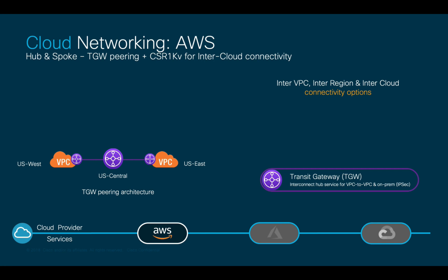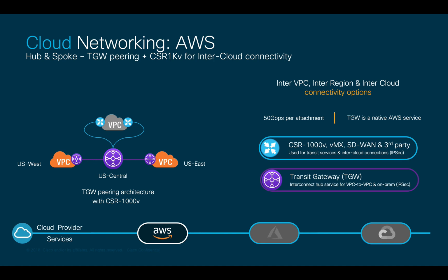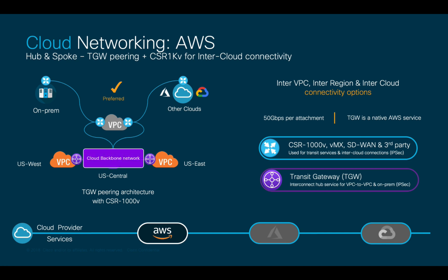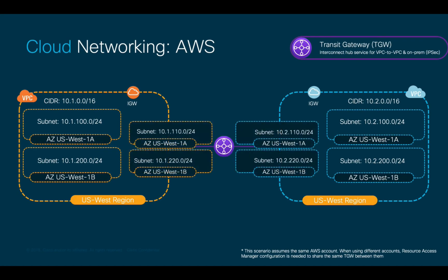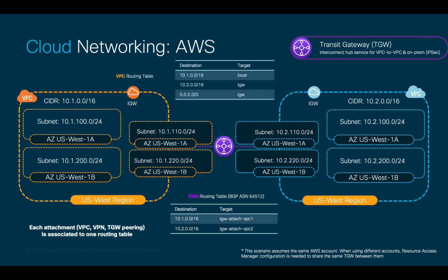TGW is an interconnect hub service that the different VPCs attach to, allowing higher bandwidth per attachment than VGW, and also offering VPN connection options to external environments. CSR1000v can also be used in conjunction with TGW for external connectivity to on-prem sites and across clouds. TGWs are the preferred option for inter-VPC communication, especially since it uses the cloud provider backbone network. You just have to attach each VPC to the TGW service using a subnet or subnets on different availability zones from each VPC CIDR, and the TGW will automatically pull the CIDR information as part of its routing table. On each VPC that you attach to the TGW, you will need to add static routes to other VPC CIDR blocks pointing to the TGW as the next hop in your routing table.